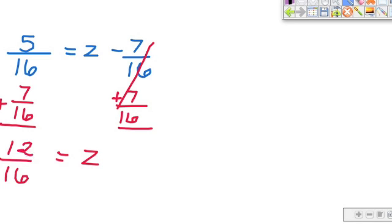Now before you walk away from this, can I reduce 12 sixteenths? I can. I can reduce it to three-fourths. So three-fourths equals z. And that's your final answer. And again, you can plug this back in for z and double check.